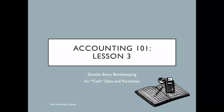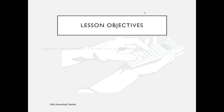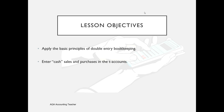Welcome to Accounting 101 Lesson 3. This is going to be double entry bookkeeping for cash sales and cash purchases. The objectives for this session are: we're going to be continuing to apply the basic principles of double entry bookkeeping, entering cash sales and purchases into the T-account, and double checking that our debits and credits, when we take one away from the other, equals zero — meaning the double entry is arithmetically correct.